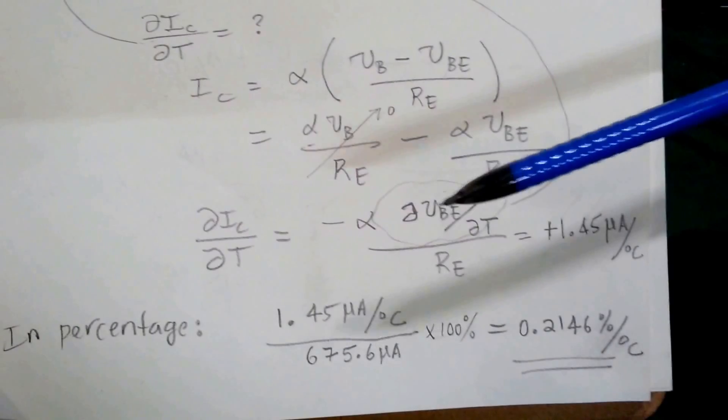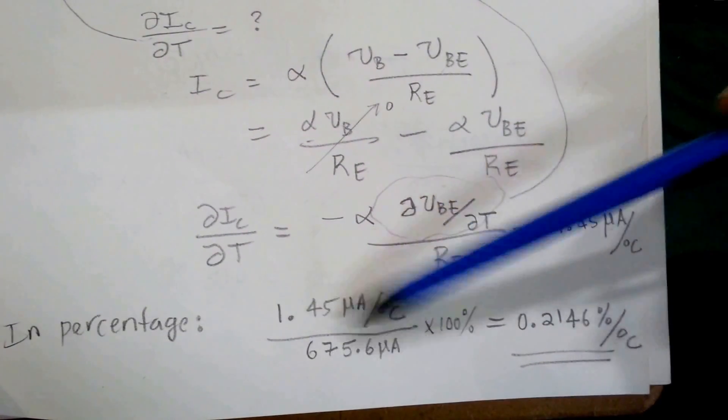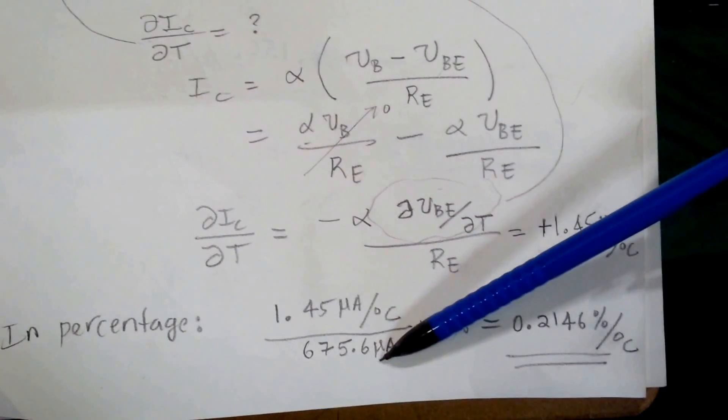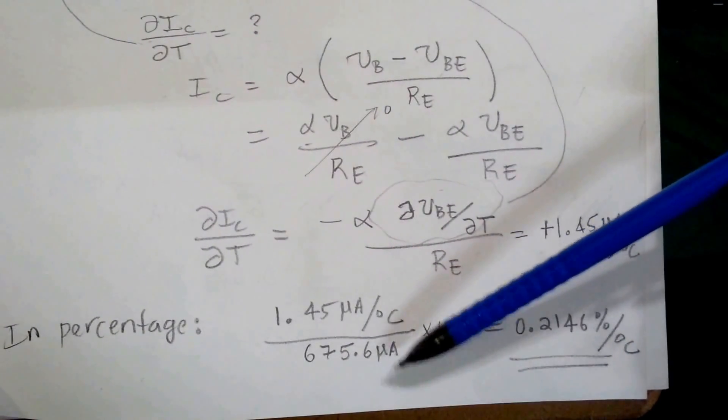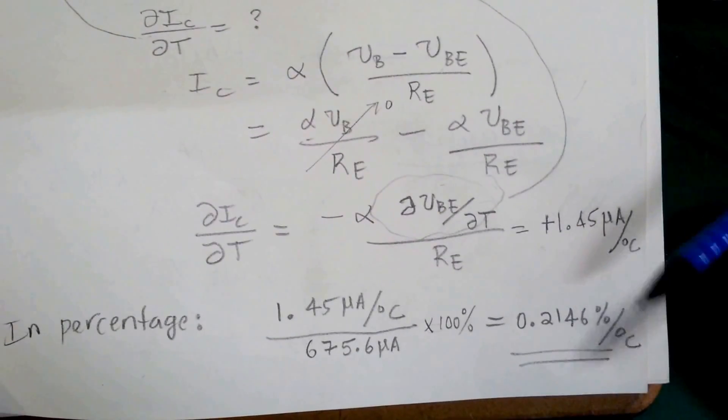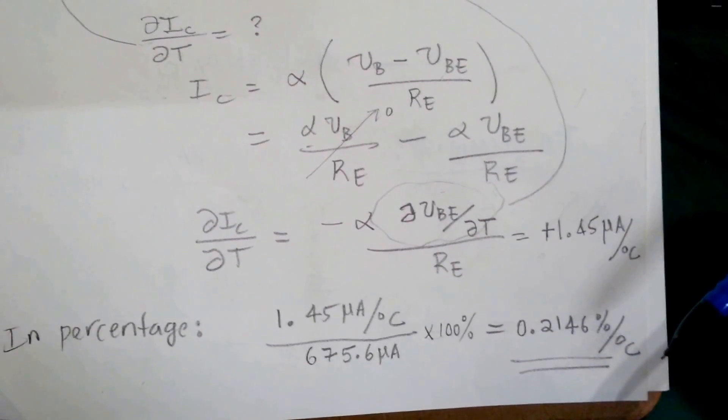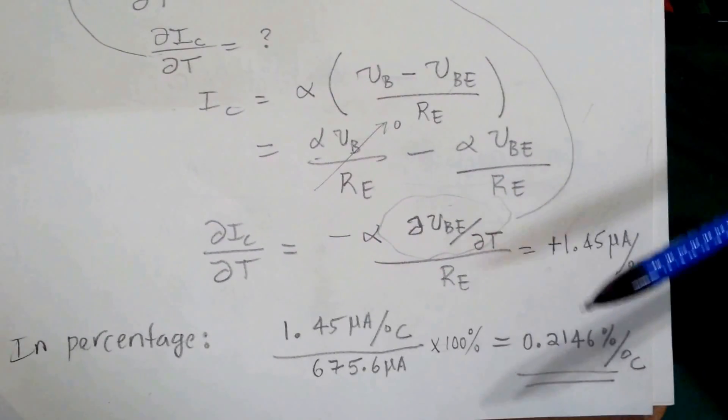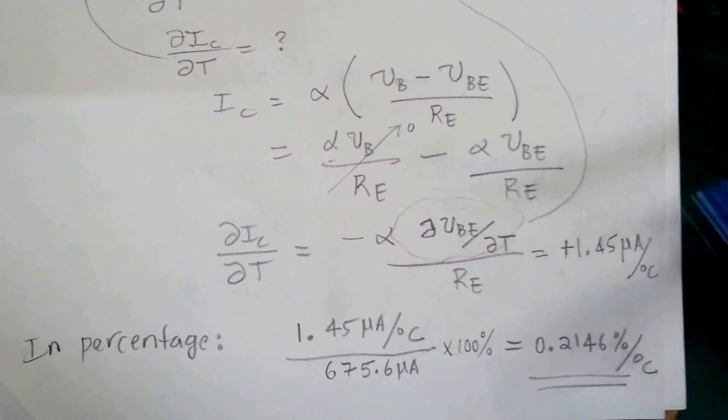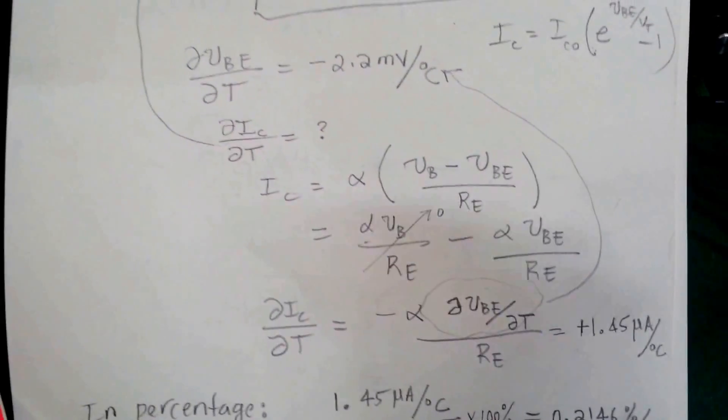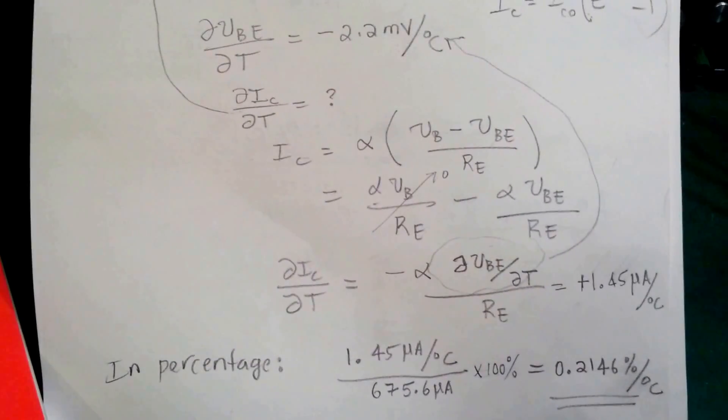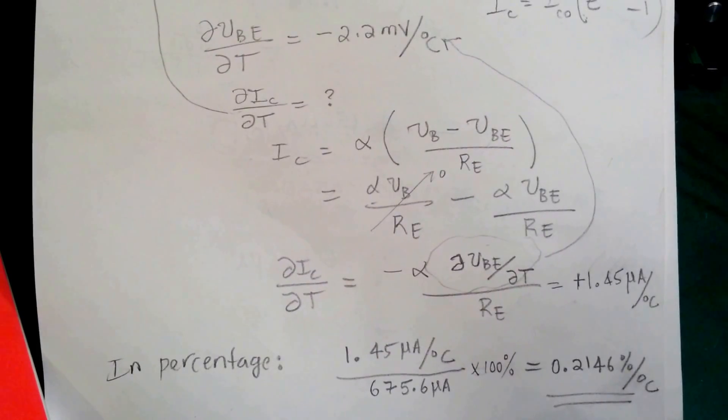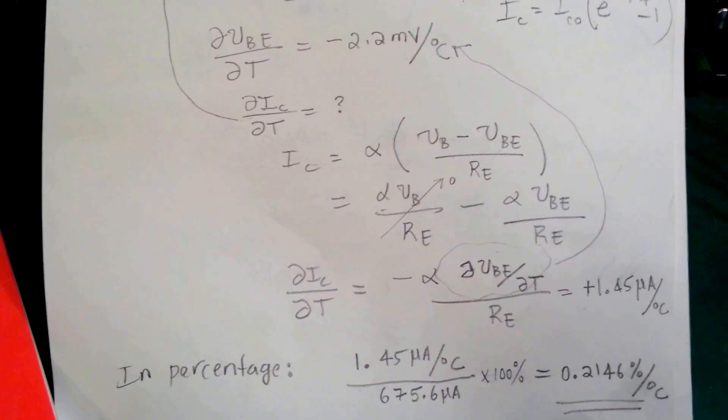And if you want in percentage, we just take the calculated temperature coefficient, divide it by the nominal current that we calculated, and multiply by 100. We get 0.2146 percent per degree C. So in fact, the collector current will increase by a percentage of 0.214 per degree C. Now we'll continue to read the last part of part D of question number 2 of the Art of Electronics and conclude this problem-solving session.